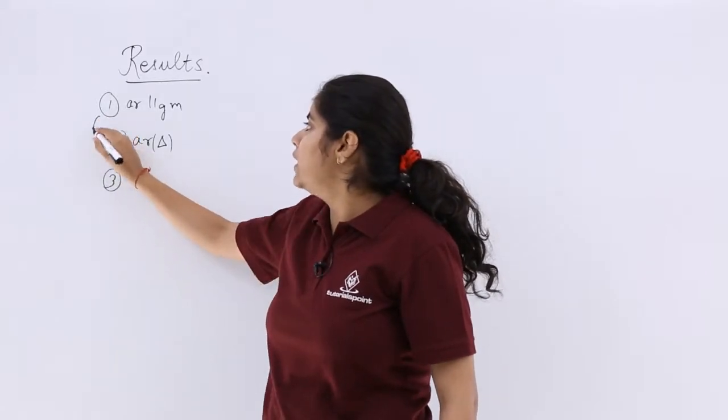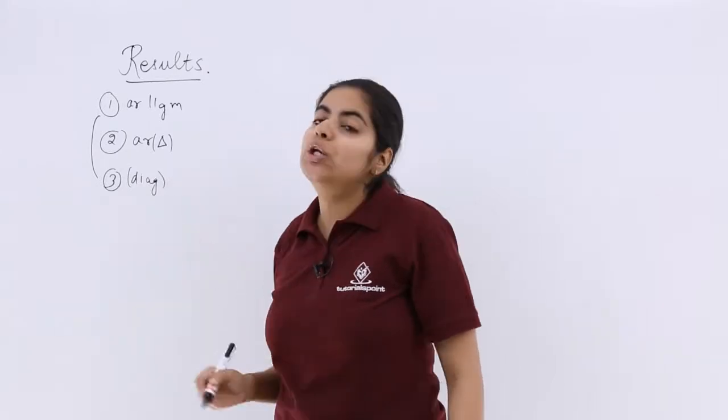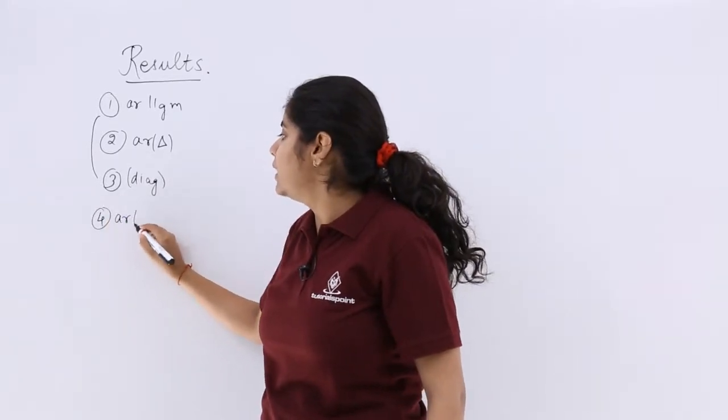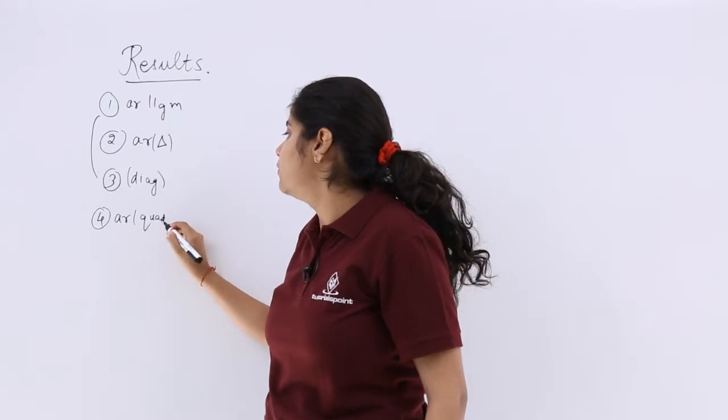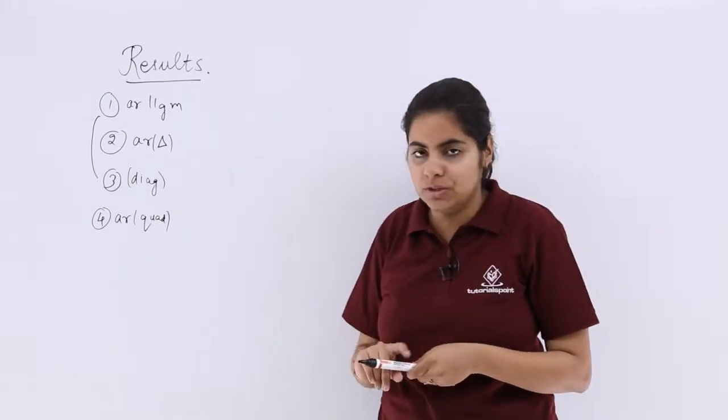If I have to talk about the area of parallelogram in terms of diagonals, I can do it still. And the fourth is talking about the area of a given quadrilateral with the diagonals. So these four things can be automatically and very easily done with the vector product.